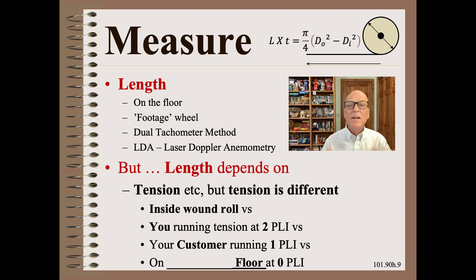The tension inside a wound roll is different for you running at 2 pli versus your customer running at 1 pli and measurements on the floor at 0 pli. Everyone who measures in those three different ways will get three totally different averages for the length measurement.